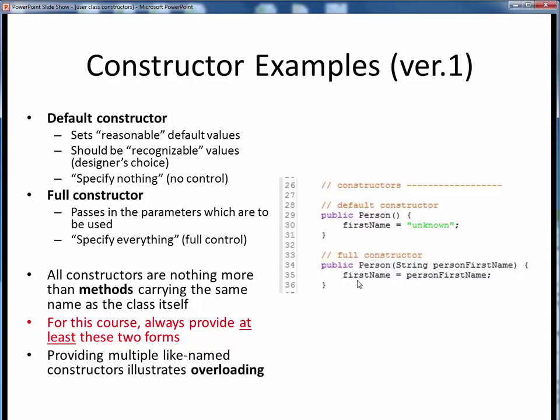Again, notice that constructors are simply small, simple methods bearing the same name of the class. These two examples represent the two extremes of constructors. A default constructor is the simplest way of instantiating an object, but gives us no control over the process. A full constructor takes a little more work, but it gives us full control over instantiating an object. For this course, we'll consider it our coding standard to always provide at least these two constructor forms, a default and a full constructor.